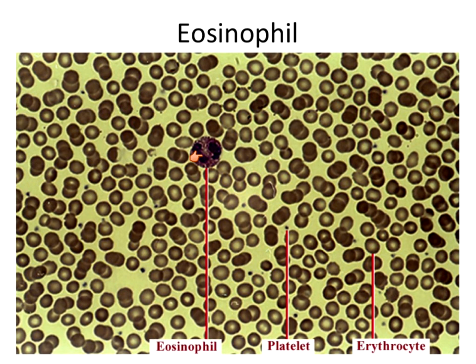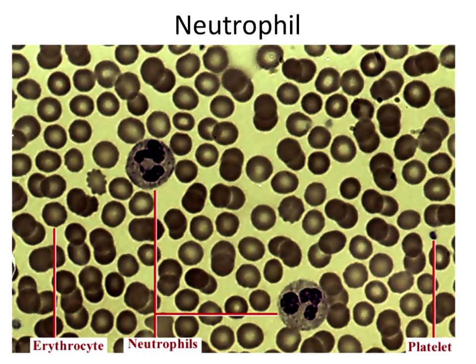Going back to the eosinophil — notice the nuclei have just a little bridge connecting the two lobes. Neutrophils have a trilobed nucleus with one, two, three lobes. This is also a granulocyte. So eosinophils, neutrophils, and basophils are all granulocytes, while monocytes and lymphocytes are agranulocytes — they don't have those granules.